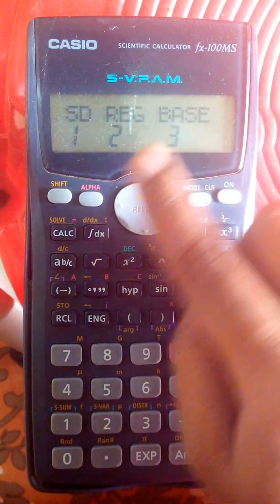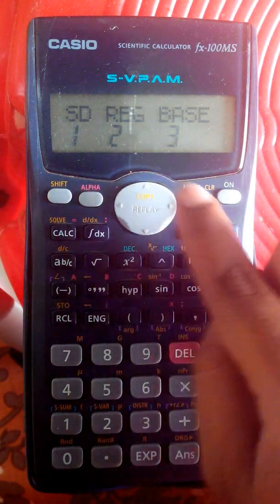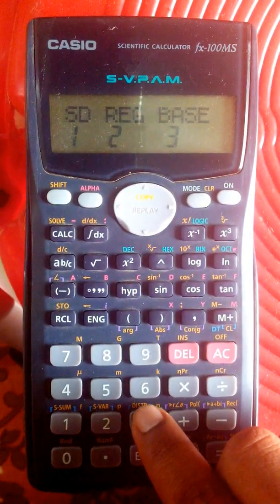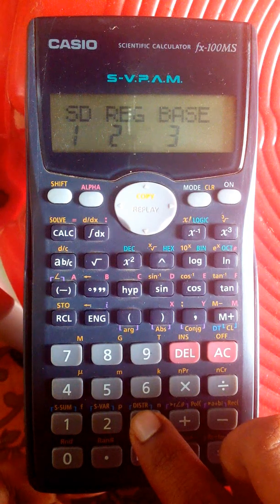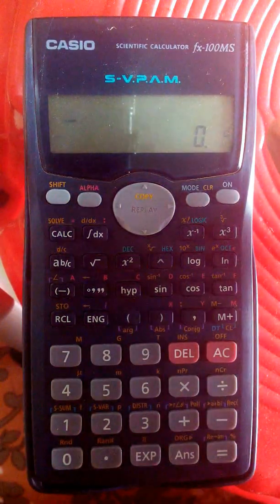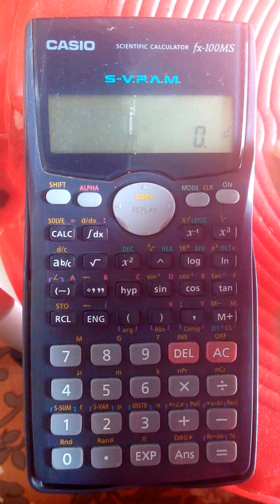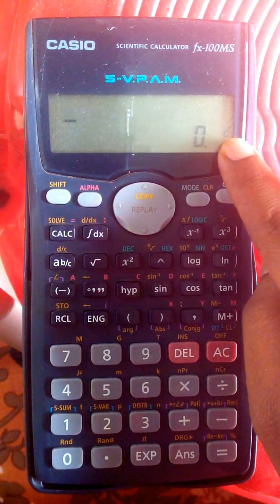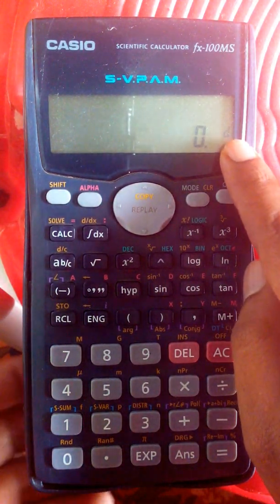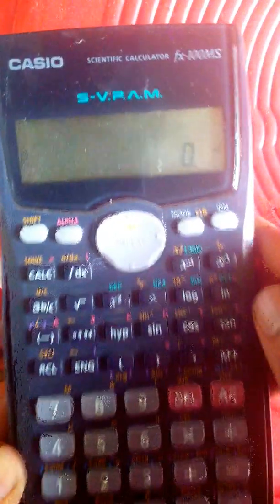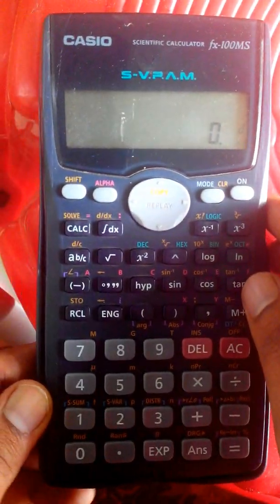Press the mode button two times. It will show the options: ESD REG and BASE. Press 3 to select BASE. Once you press 3, it will convert automatically into the base mode. You can see here it is in BASE, which means it is in decimal.